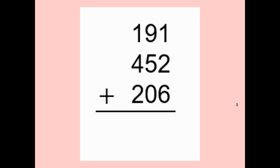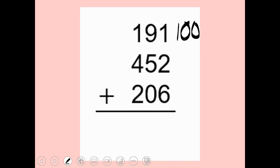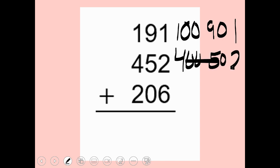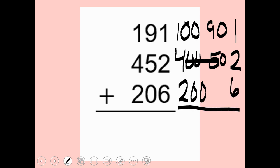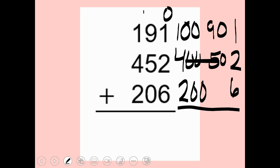Let's look at adding another number. My strategies stay the same. This can also be written as one hundred ninety and one, four hundred fifty-two, and two hundred six — that's the expanded form strategy. We're going to do it both ways so you can see.